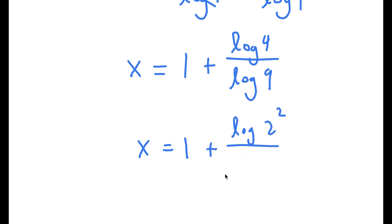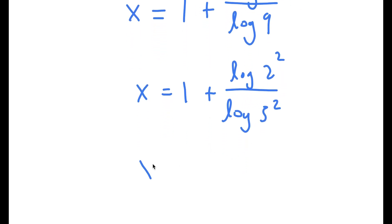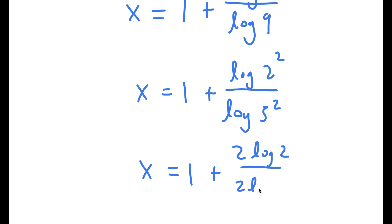Log 9 I can rewrite as log of 3 squared. So log 4 over log 9 becomes 2 times log 2 over 2 times log 3. So x is approximately 1.631.